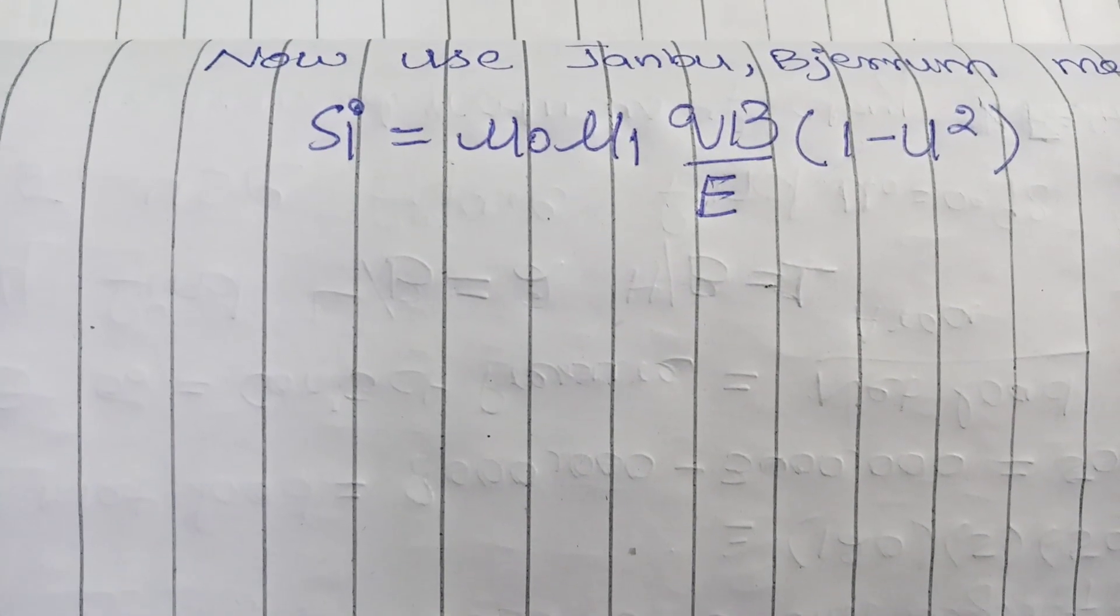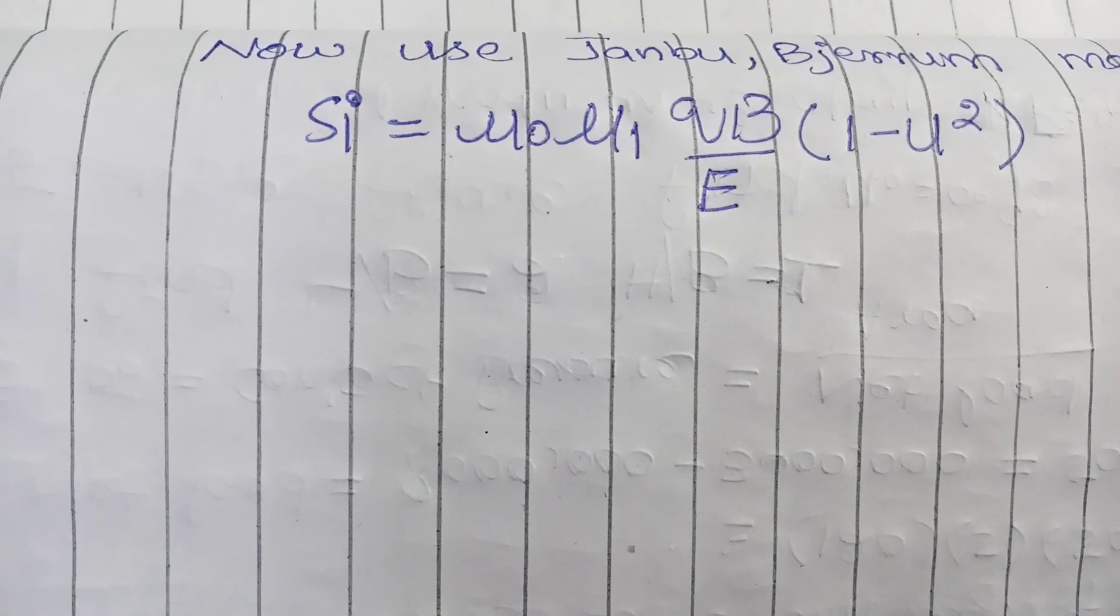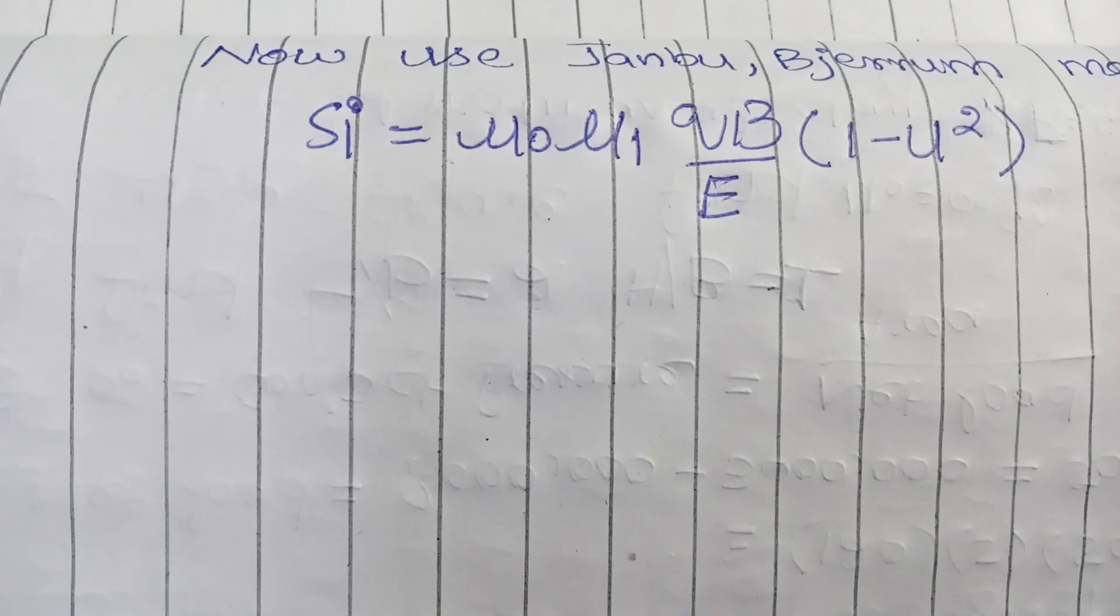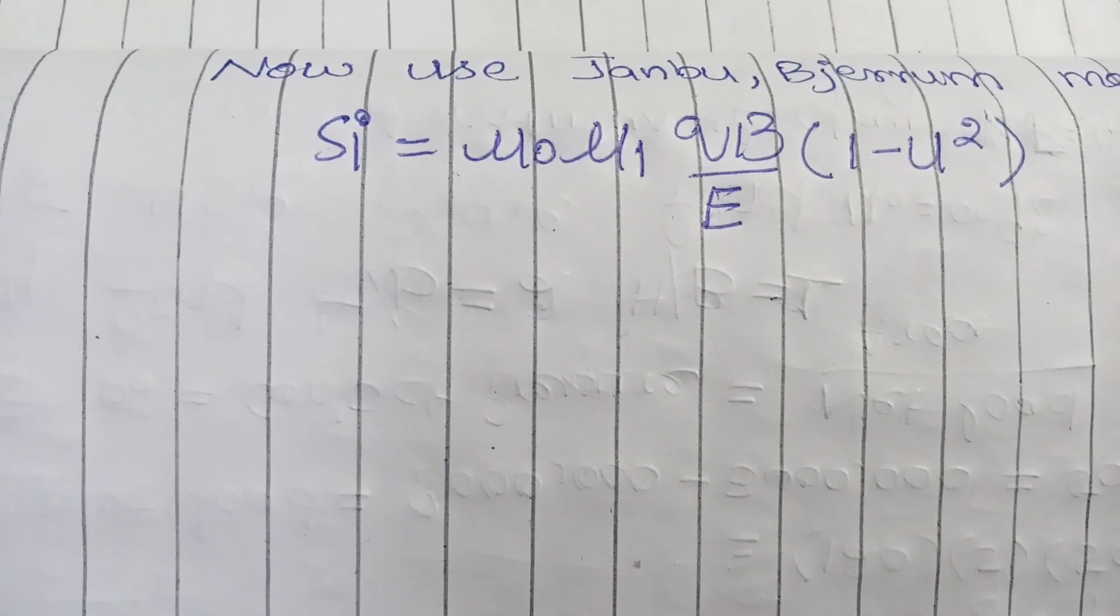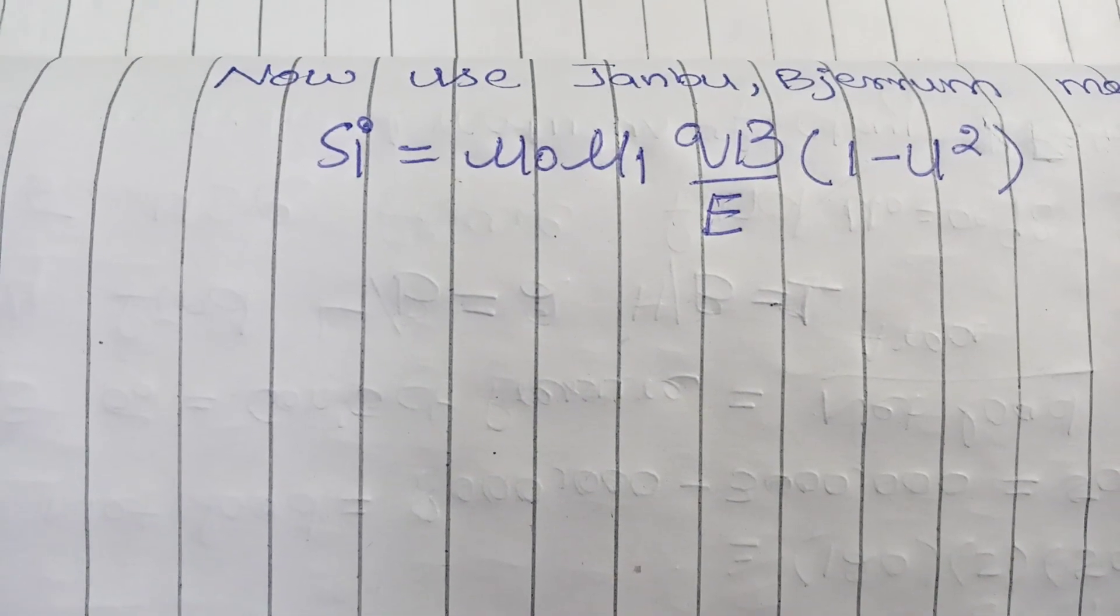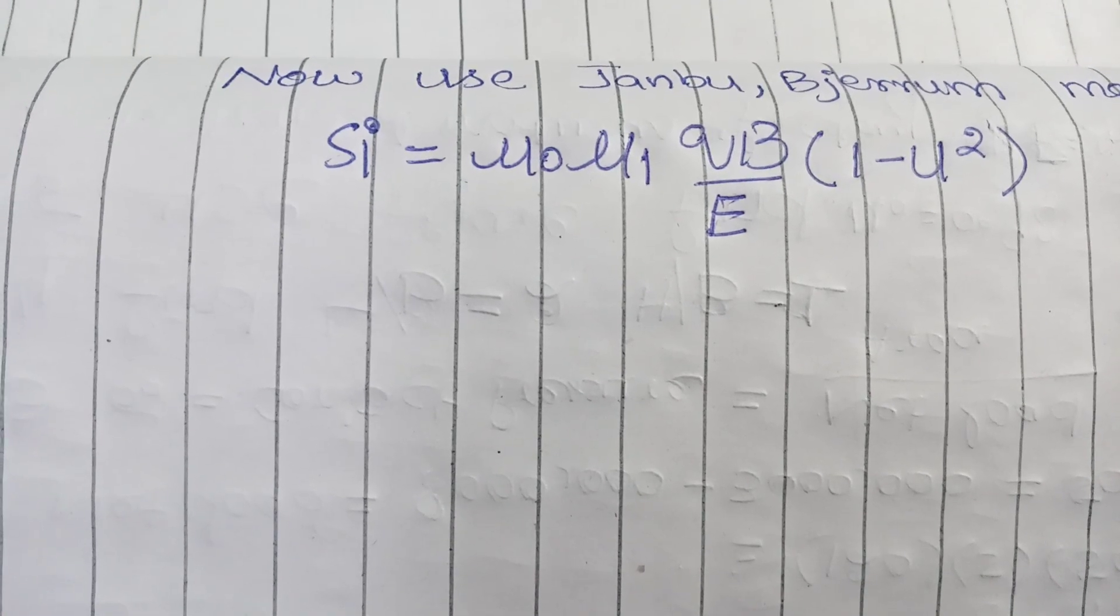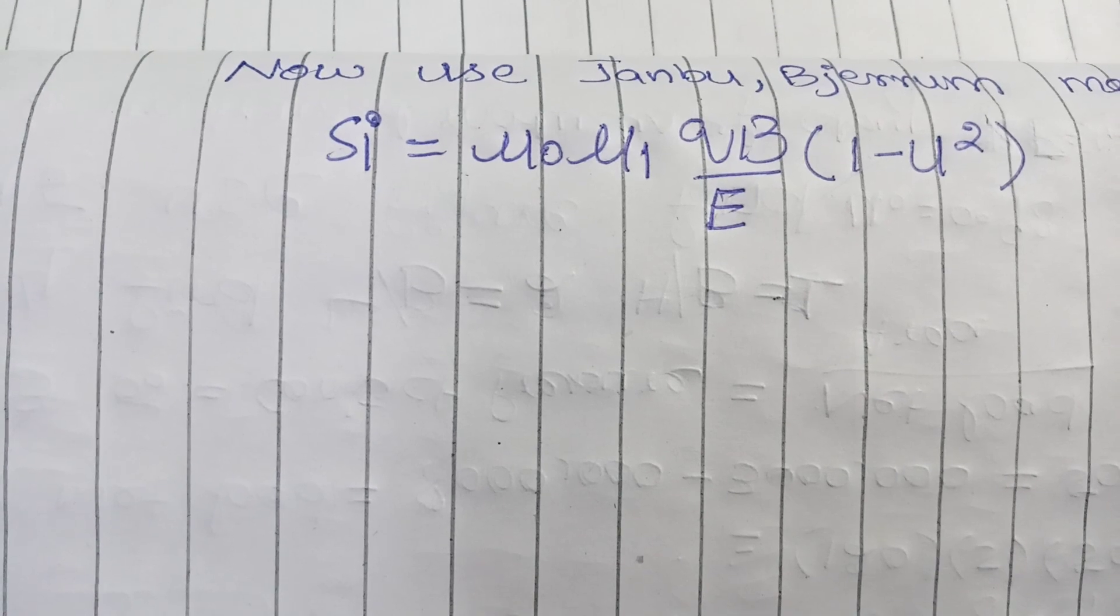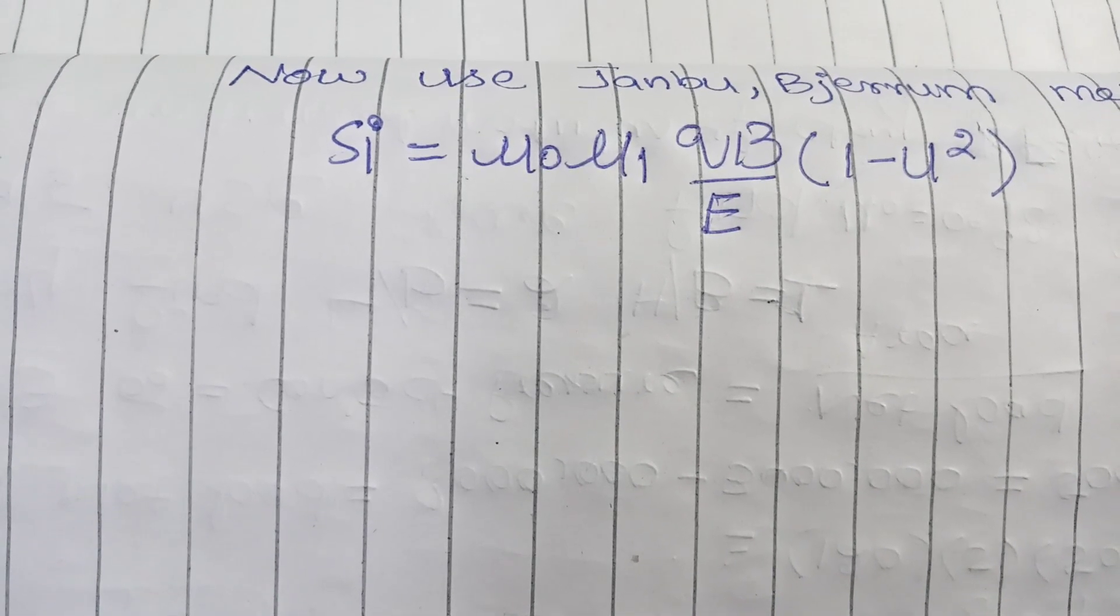It will help us to find immediate settlement. You can see in this formula we have u0 and u1. We find this value from graph. q is the net load, which comes from dead load minus excavated weight of soil. B is the width, e is the undrained modulus, 1 minus u. Here u is the Poisson's ratio.